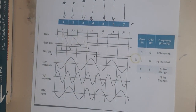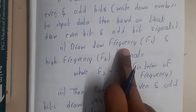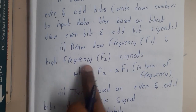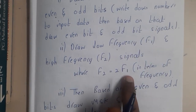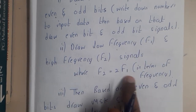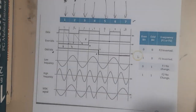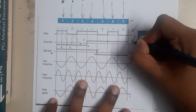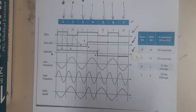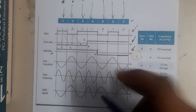Once you have drawn the even and odd bit signals, you draw the low frequency f1 and high frequency f2 signals, where f2 equals twice f1 in terms of frequency. So once the data drawing — even drawing and odd drawing — is done, you draw these two frequencies.